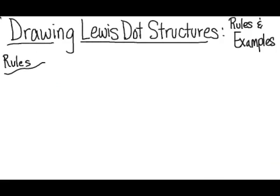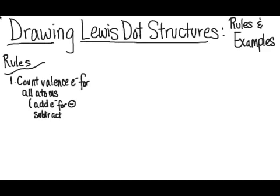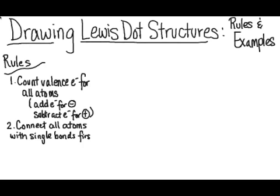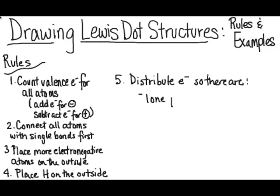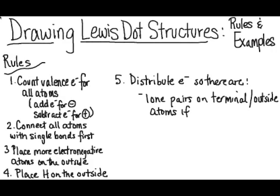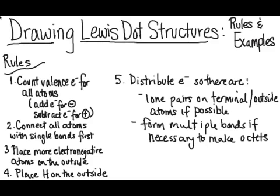This time, what I'm going to do is show you the rules and then do some more practice. First, you need to count the valence electrons for all atoms. We're going to add electrons for negative charges, subtract electrons for positive charges. I'll get to that in a little bit. And we'll also connect all the atoms with single bonds first and then place more electronegative atoms on the outside. And the fourth thing is to place hydrogens on the outside. And the fifth thing is to distribute electrons so there are lone pairs on the terminal or the outside atoms if possible. And then we're going to put multiple bonds if necessary to make octets like I did with carbon dioxide.